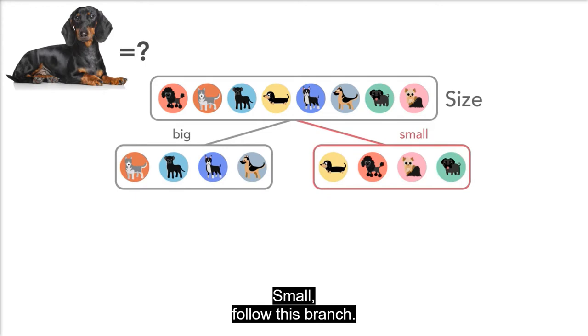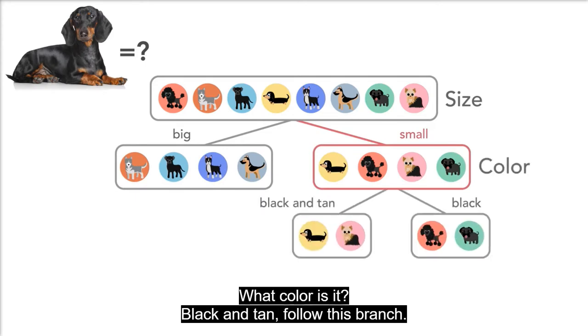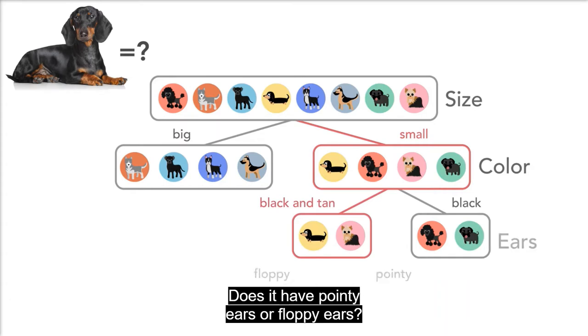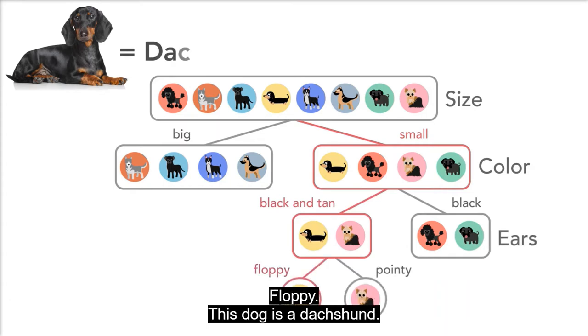Small. Follow this branch. What color is it? Black and tan. Follow this branch. Does it have pointy ears or floppy ears? Floppy. This dog is a dachshund.